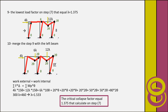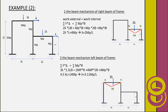In example number two, we have a two-bay frame with a different level, with horizontal and vertical loads at different levels. We have lambda at level one and lambda for level two. We use the same procedure that we followed in the previous slide.